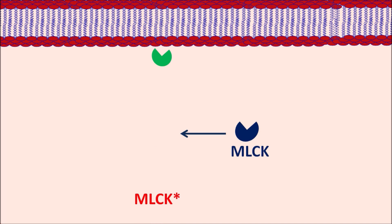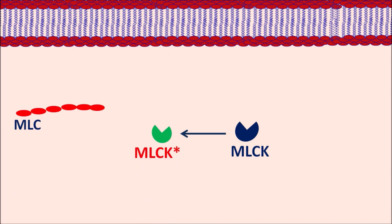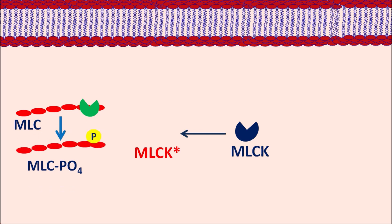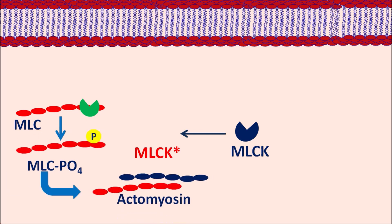The second action of nebivolol is on the vascular smooth muscle. Normally, MLCK (myosin light chain kinase) is a phosphorylating enzyme which is activated to produce its active form. This active enzyme acts on MLC (myosin light chains), converting the myosin light chains into myosin light chain phosphate. This MLC phosphate can produce an actomyosin complex by binding with actin. In this way, MLCK plays an important role in contraction of vascular smooth muscle.